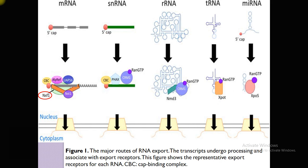An exception export receptor is used for some mRNAs, but the CRM1 complex is mainly useful for small RNAs — ribosomal RNAs, snRNAs, and certain subsets of mRNAs are exported in a CRM1-dependent manner. snRNAs are 5-prime capped but have no polyA tails, so they are exported from nucleus to cytoplasm with the help of receptor CRM1, which contains RanGTP.